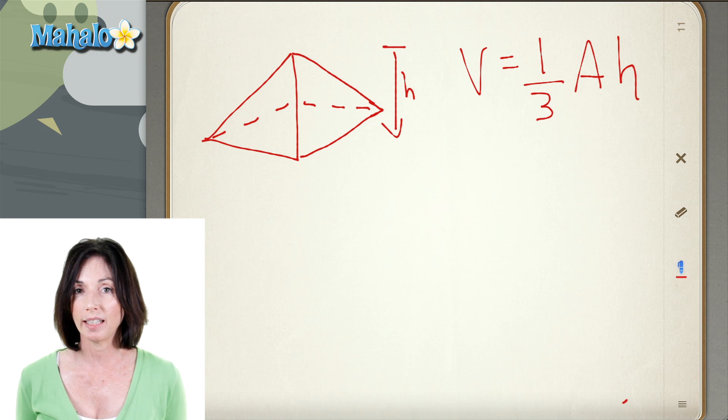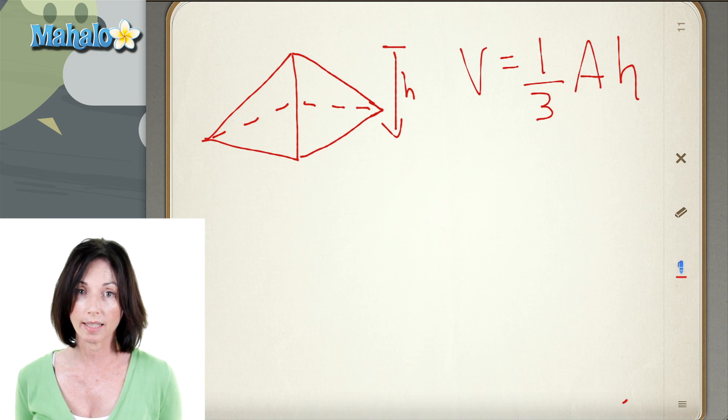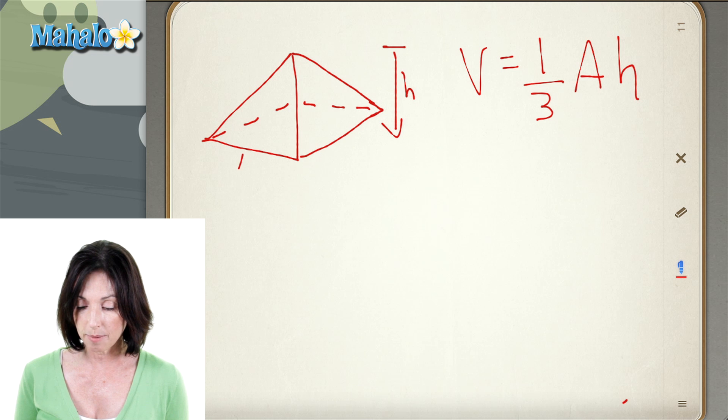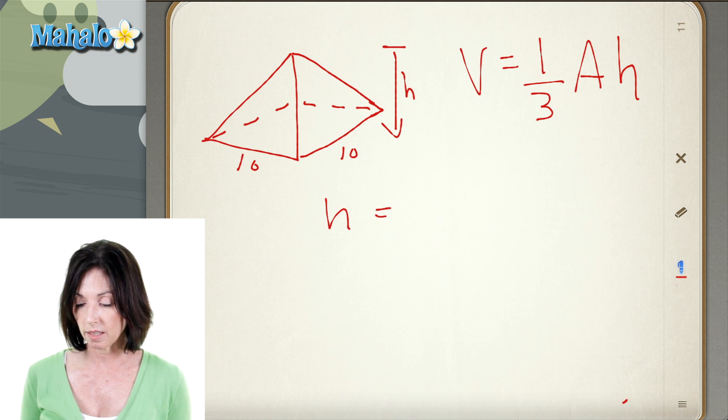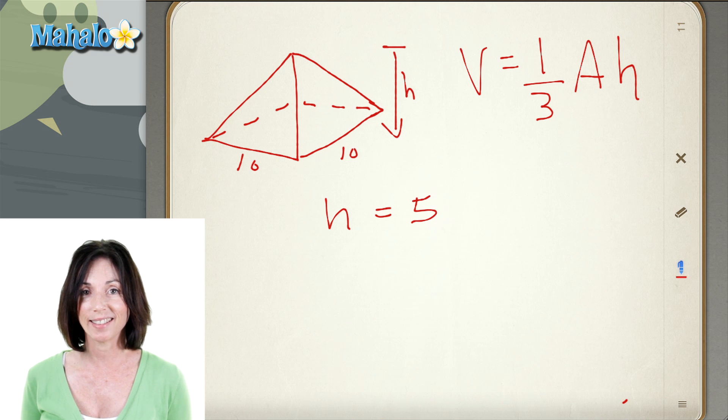So the pyramid I've drawn here happens to have a square base. Let's say that it's 10 by 10. And let's say that the height of my pyramid is 5. So let's calculate the volume.